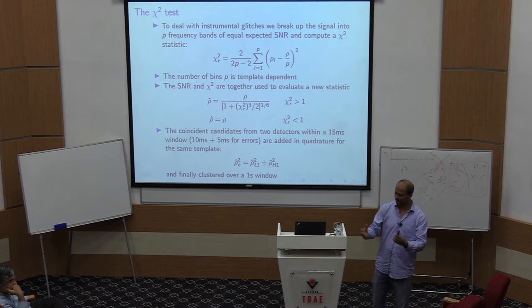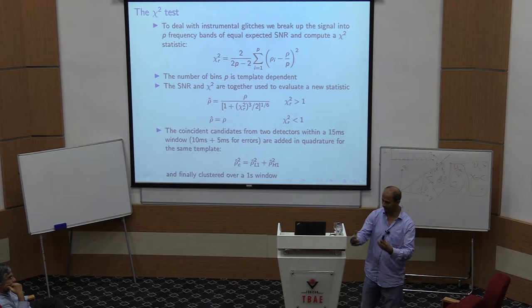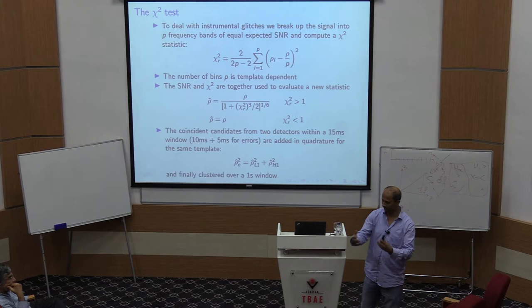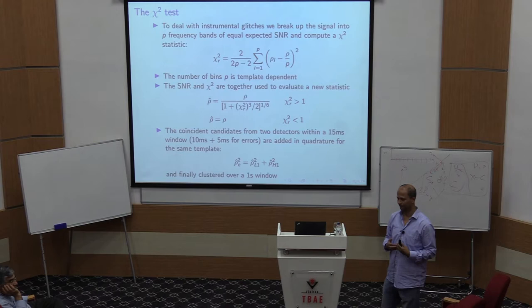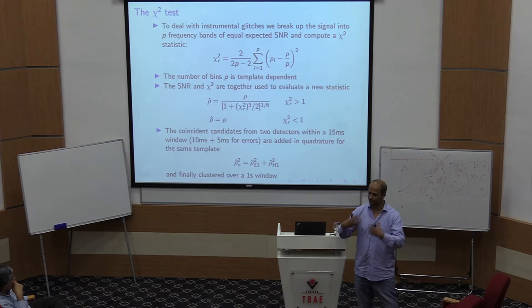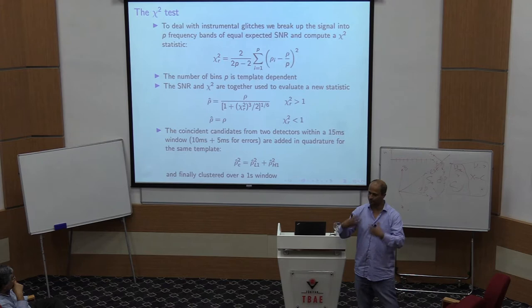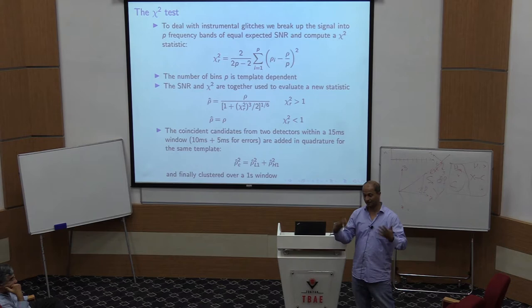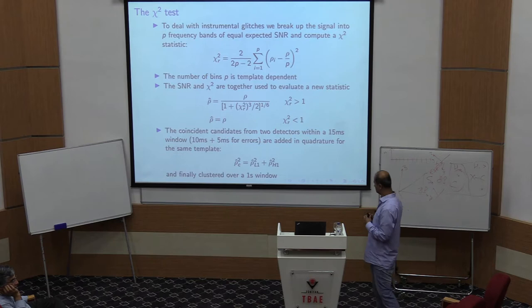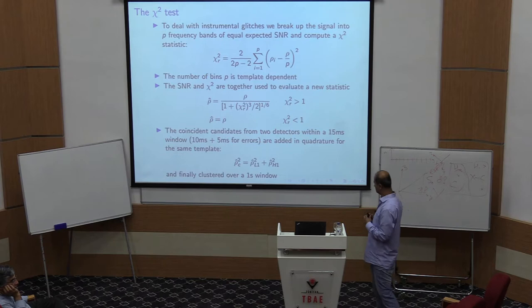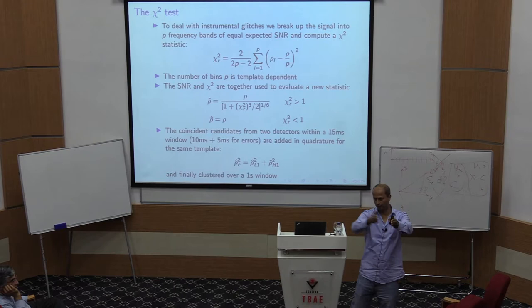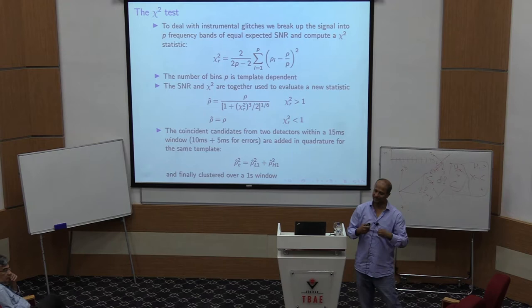The key is to do something more with each candidate to check whether it is a real signal. For Gaussian stationary data, anything beyond the likelihood ratio is guaranteed to hurt you — that's the Neyman-Pearson lemma. But since real data is non-Gaussian and non-stationary, something smart can help. The approach: take a template covering frequency range F1 to F2, break it into subbands chosen so that a real signal would give equal power in each band.